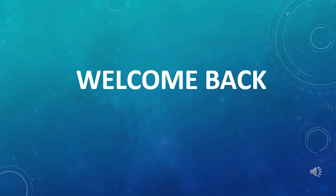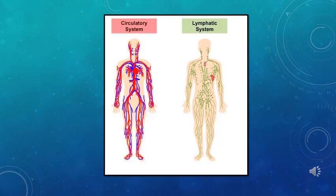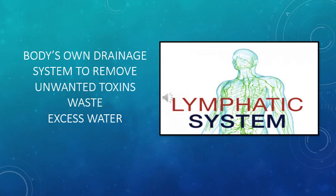Welcome back to biology class. In the previous classes we discussed the circulatory system and its components. But do you know that like the circulatory system, there is one more parallel network of millions of vessels all around our body? This is the lymphatic system. So let's study about this lymphatic system today.